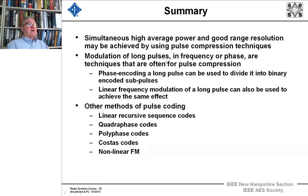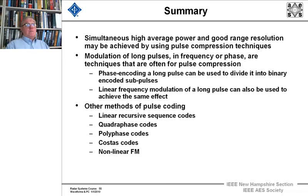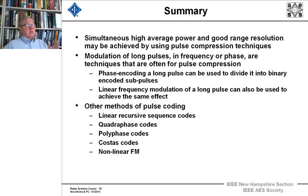In summary: simultaneously high average power and good range resolution you can get with pulse compression techniques. The main takeaway — modulation of longer pulses in frequency or phase are techniques that are often used for pulse compression. Most of the time it's probably linear FM, but phase is used too today. Phase encoding a long pulse can be useful to divide into binary encoded sub-pulses. Linear frequency FM is used most of the time. And as I mentioned, there's a variety of other methods.